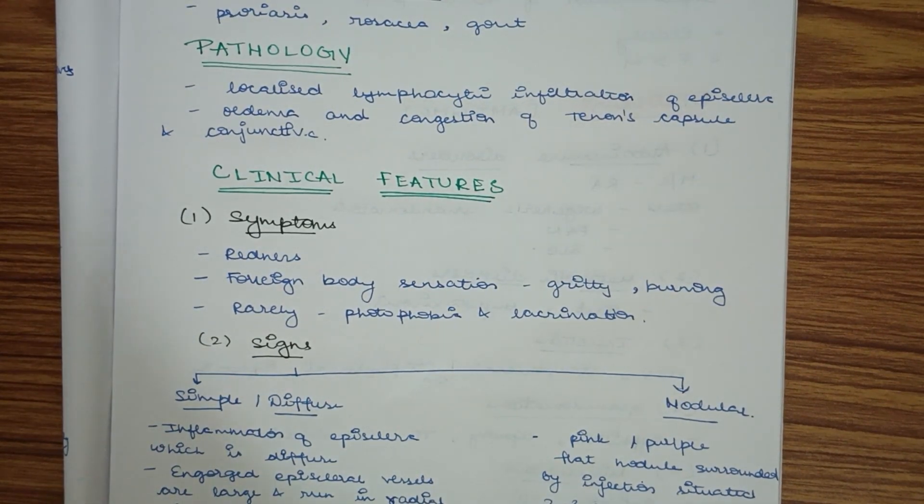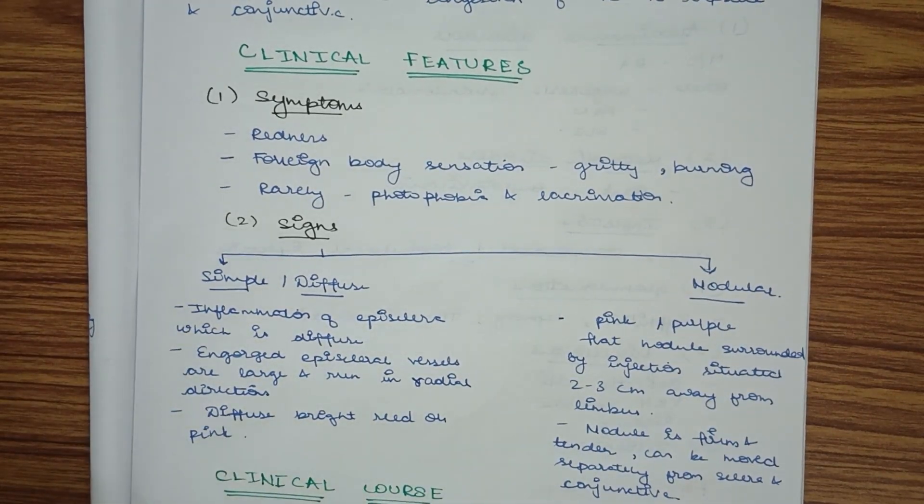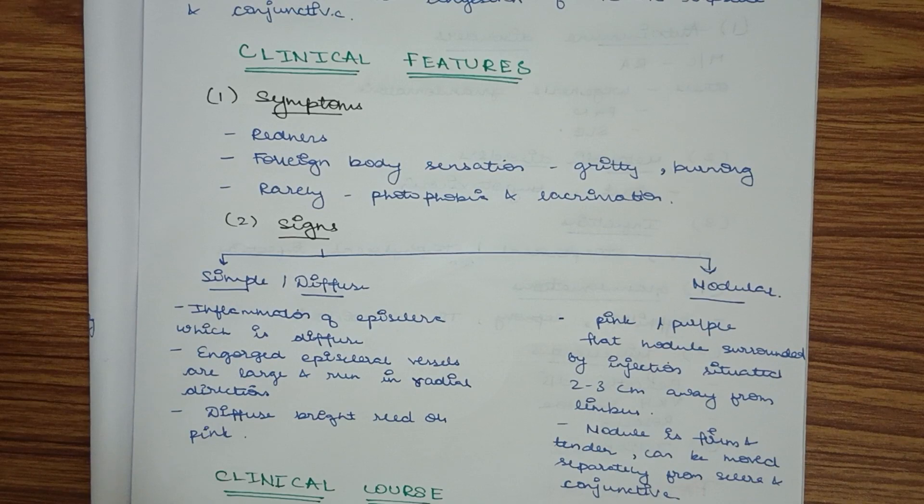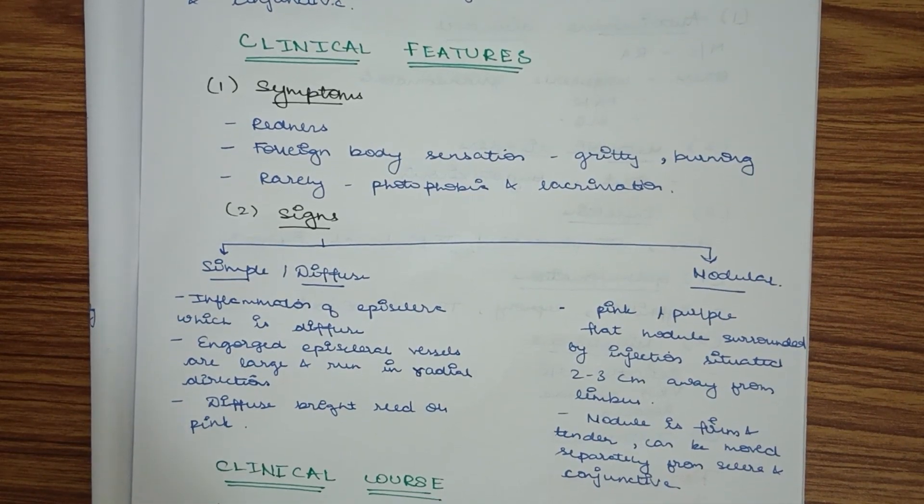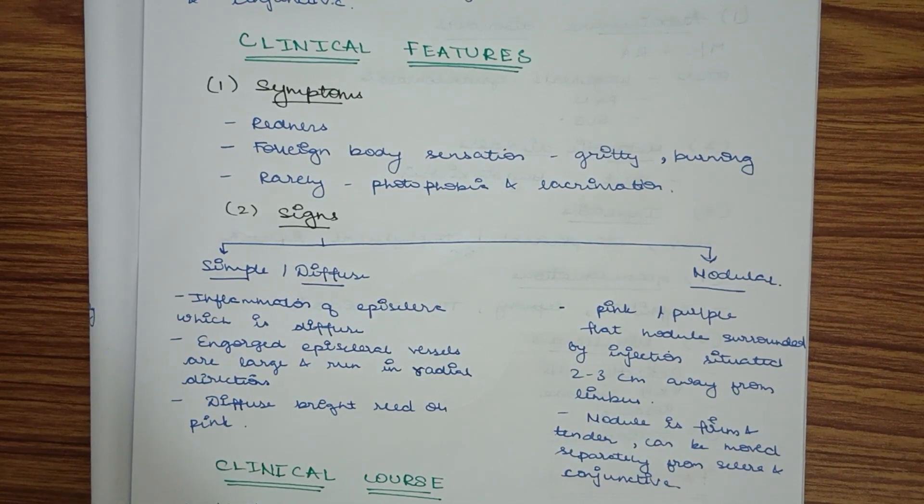Clinical features of episcleritis include symptoms and signs. The most common symptom is redness of eye, a differential diagnosis of red eye. Other symptoms include foreign body sensation with gritty or burning feeling. Rarely, photophobia or lacrimation may also occur.